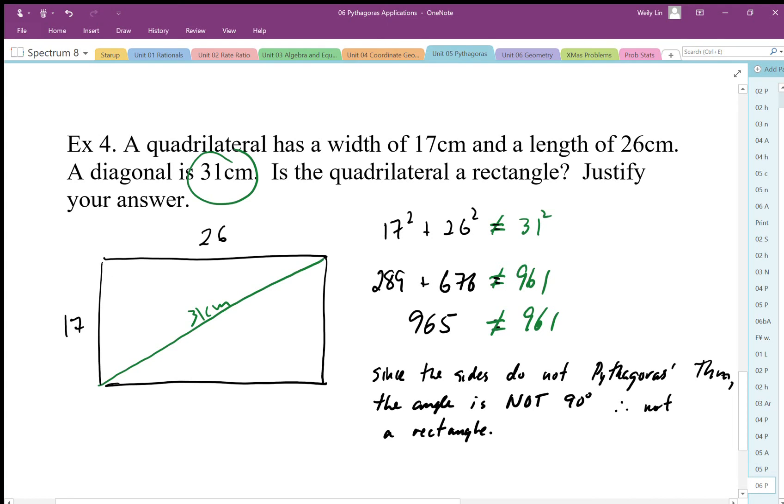Okay, so we can use the Pythagorean theorem to actually prove if something is 90 degrees or not. So this is an important consideration when we're using Pythagorean theorem. It has to be 90 degrees. The converse, or the opposite, is that if it doesn't follow Pythagorean theorem, the angle is not 90 degrees. So this is not 90 degrees. So we can use this—this is what we call the converse of the Pythagorean theorem.